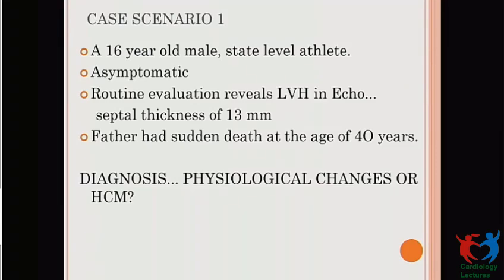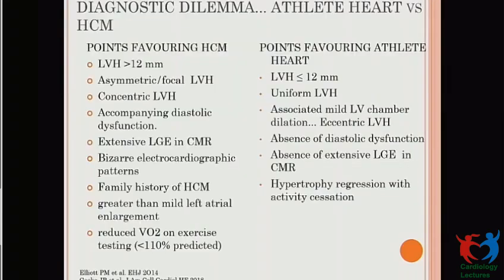Case scenario: a 16-year-old male state-level athlete, asymptomatic on routine evaluation, with LVH and septal thickness of 13 mm, whose father had a history of sudden death at age 40. The diagnostic dilemma is athlete's heart versus HCM. Points favoring HCM: LVH more than 12 mm, asymmetric or focal LVH, accompanying diastolic dysfunction, extensive late gadolinium enhancement on CMR, ECG patterns, family history of HCM, mild-to-more-than-mild LA enlargement, and reduced oxygen consumption on exercise. Points favoring athlete's heart: less than 12 mm LVH, uniform LVH, mild LA enlargement with eccentric LVH, absence of diastolic dysfunction, absence of LGE, and hypertrophy regression with deconditioning.